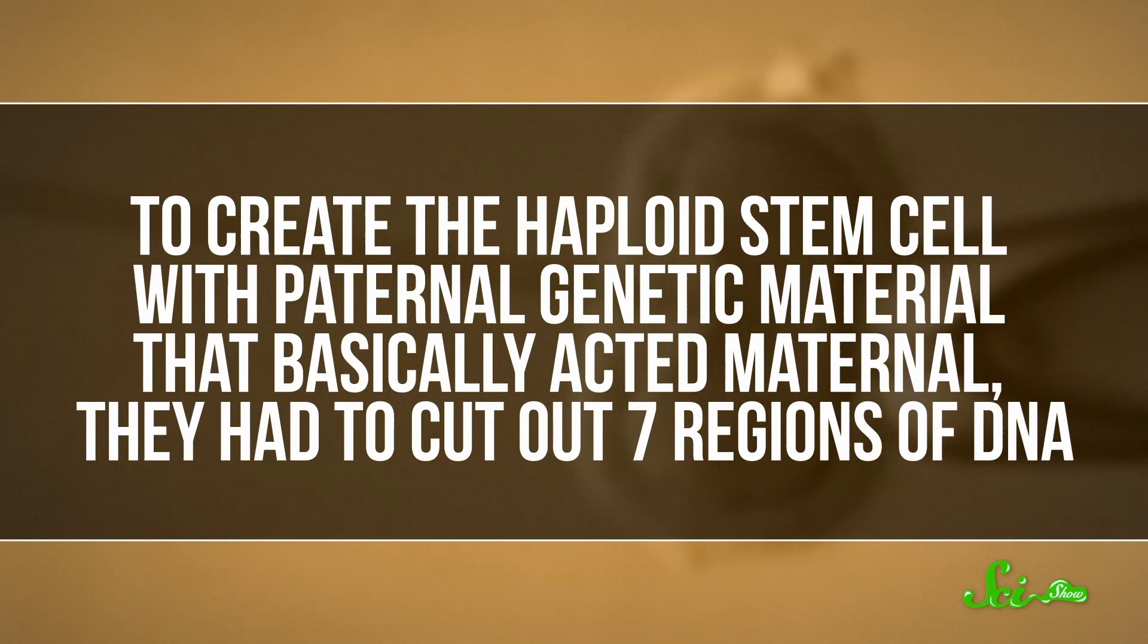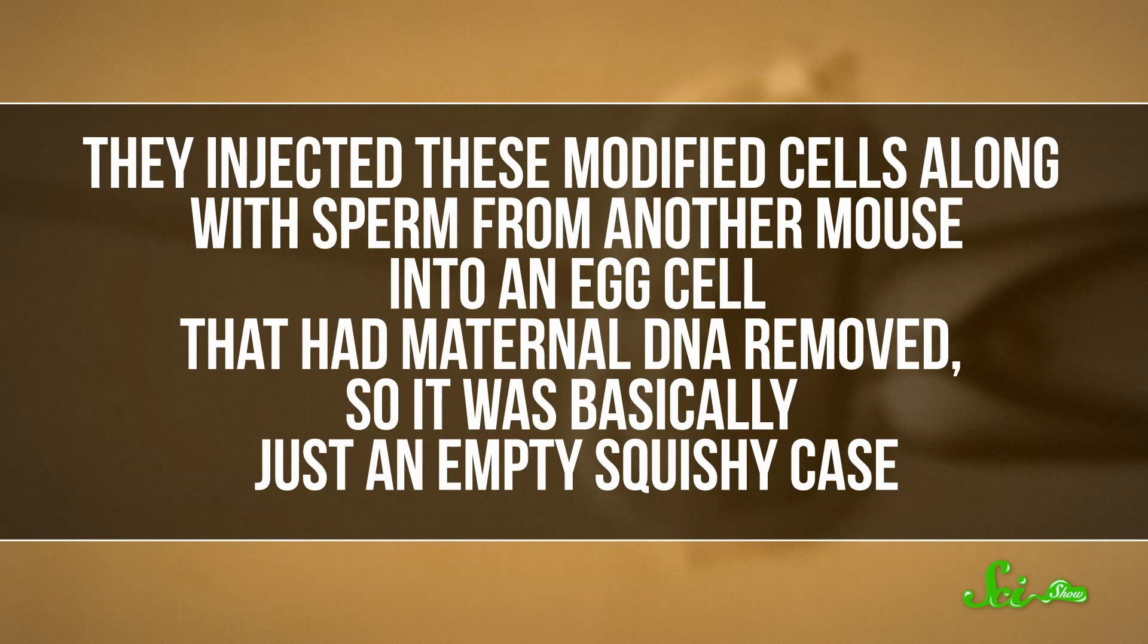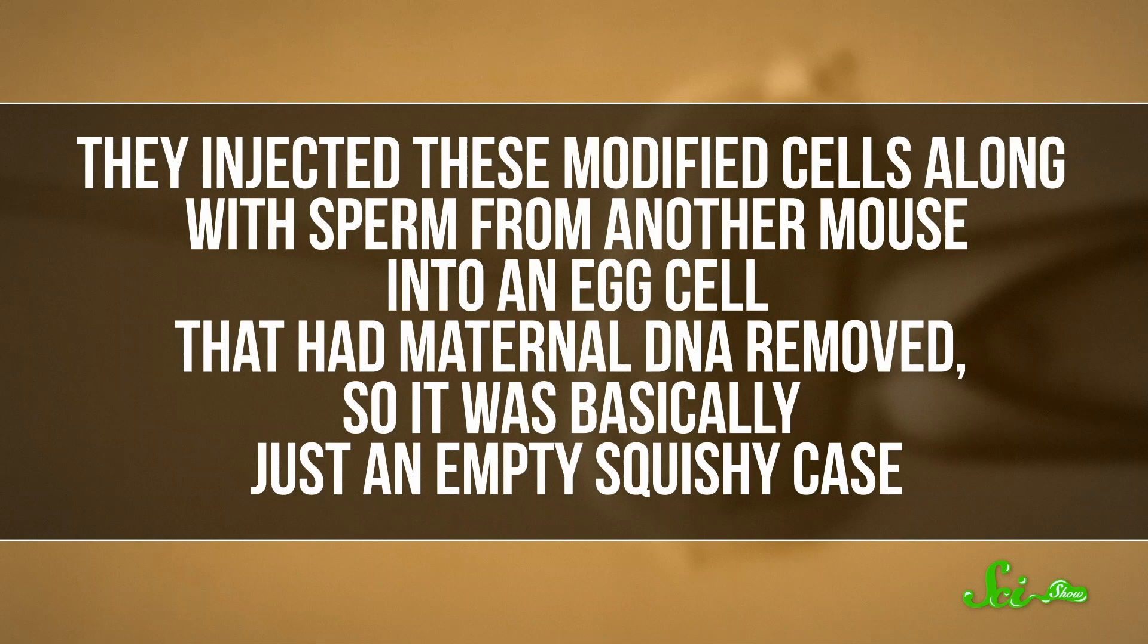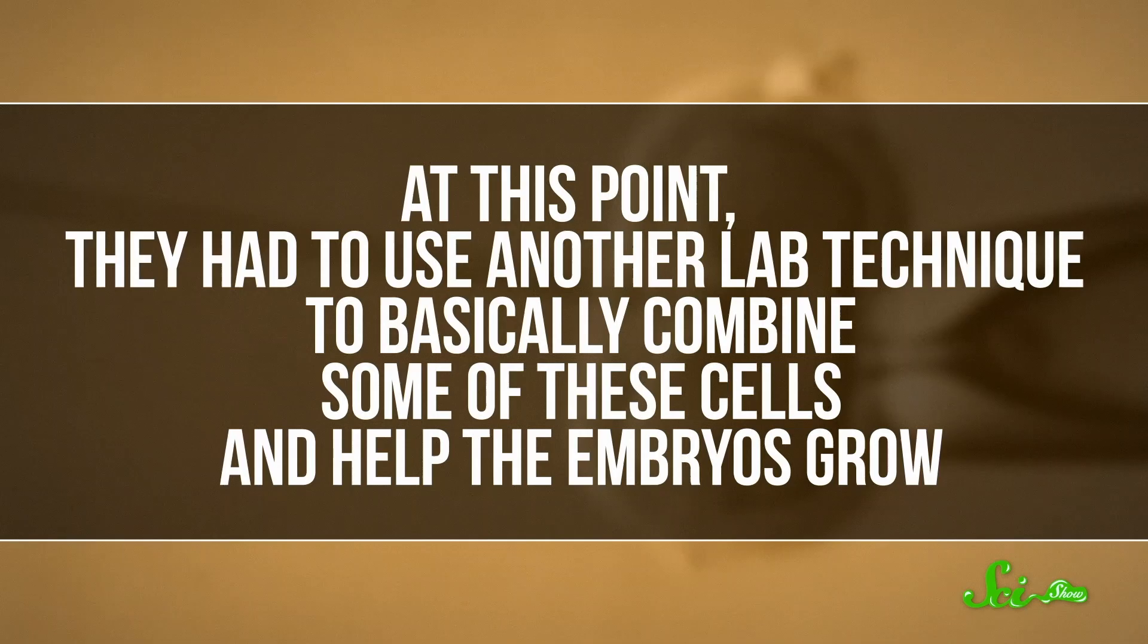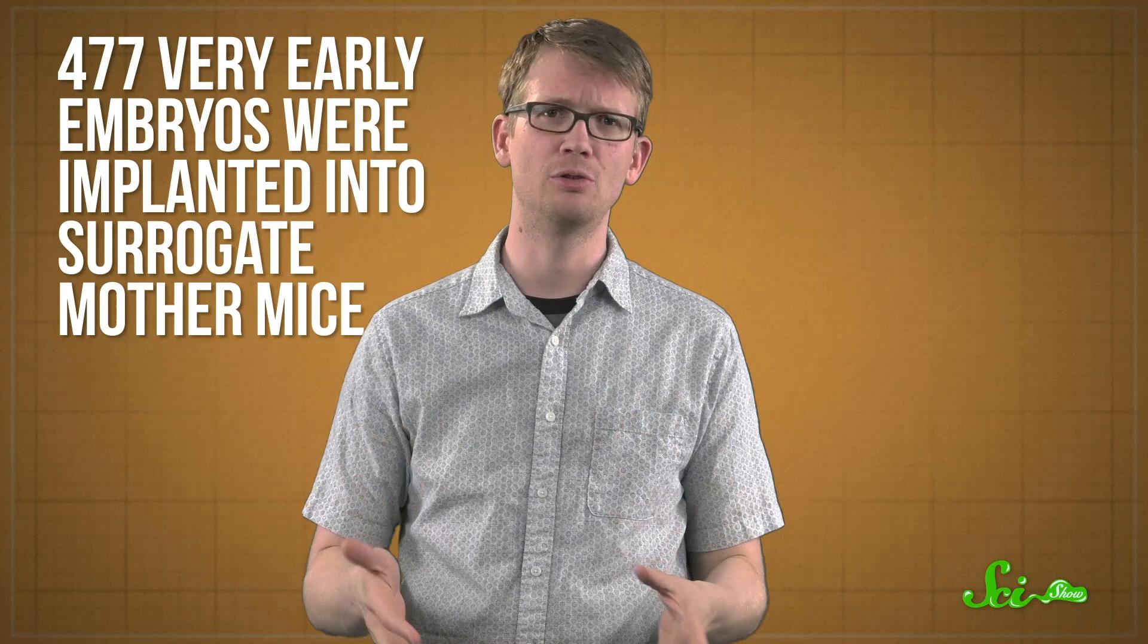To create the haploid stem cell with paternal genetic material that basically acted maternal, they had to cut out seven regions of DNA. They injected these modified cells, along with sperm from another mouse, into an egg cell that had maternal DNA removed. So it was basically just an empty, squishy case. At this point, they had to use another lab technique to basically combine some of these cells and help the embryos grow.